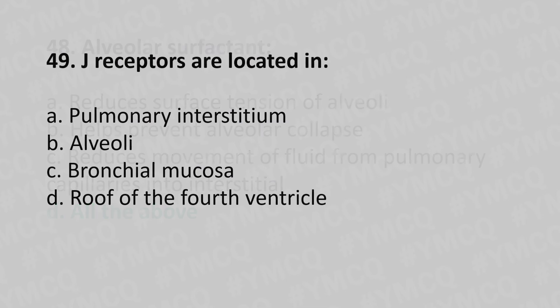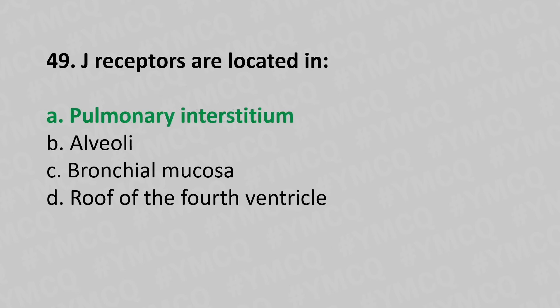Moving to question number 49. J receptors are located in. Option A: Pulmonary interstitium. Option B: Alveoli. Option C: Bronchial mucosa. Option D: Roof of the fourth ventricle. And the answer is Option A, pulmonary interstitium.